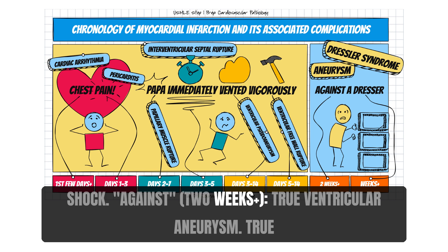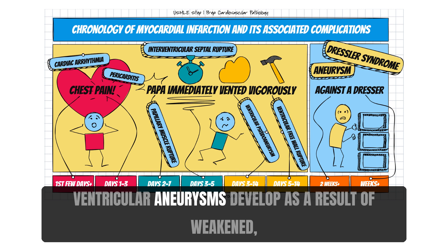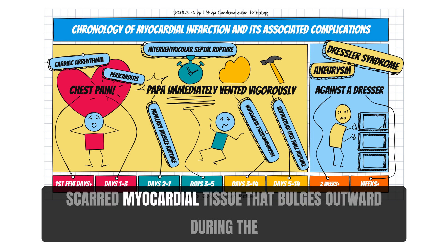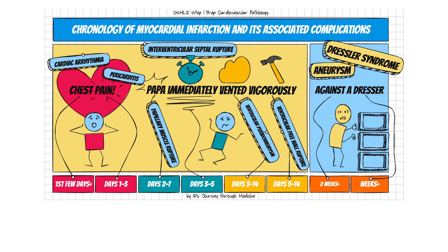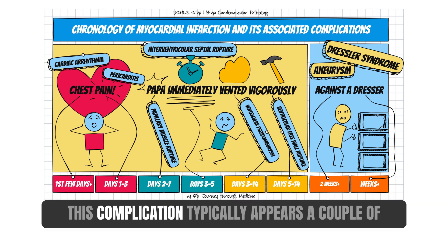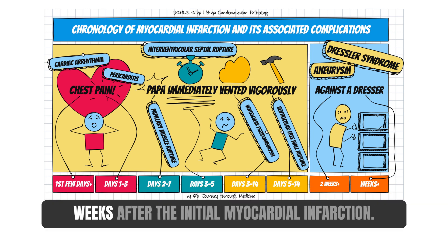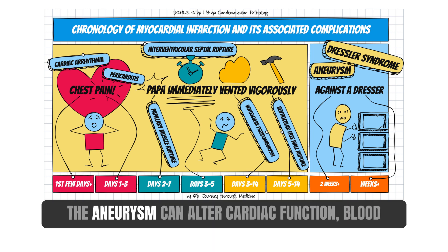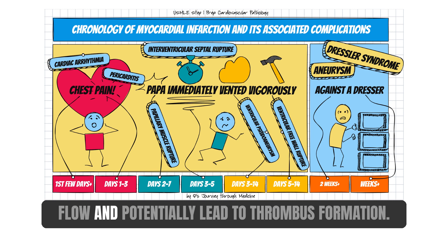Against — 2 weeks — true ventricular aneurysm. True ventricular aneurysms develop as a result of weakened, scarred myocardial tissue that bulges outward during the contraction of the heart. This complication typically appears a couple of weeks after the initial myocardial infarction. The aneurysm can alter cardiac function, blood flow, and potentially lead to thrombus formation.